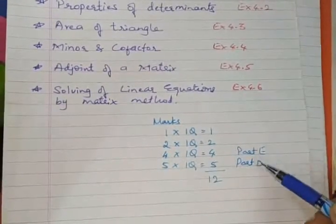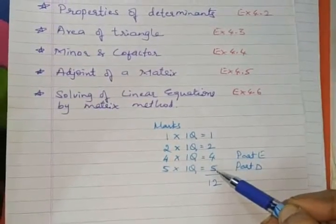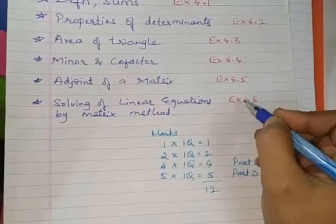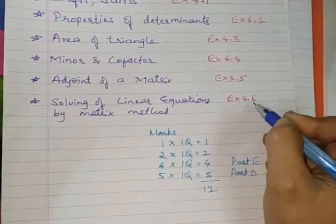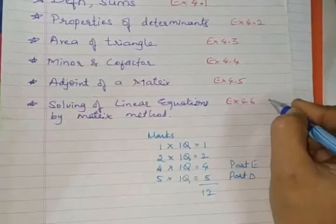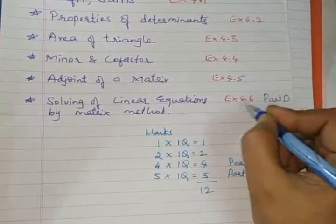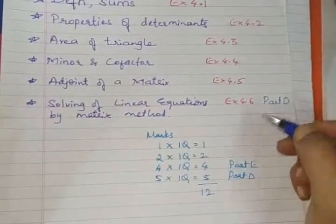Now in this part E as well as part D, these two, 4 marks question as well as 5 marks question, which is normally selected from 4.6 exercise. This exercise you need to be perfect. Because 5 marks, that is section D, 5 marks question will be definitely asked on this 4.6.